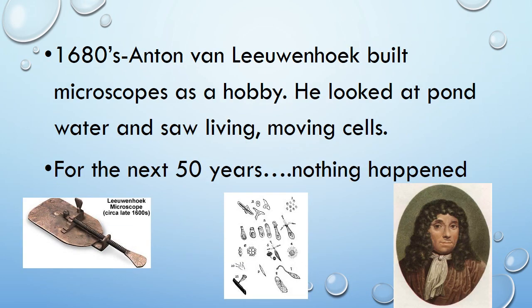In the 1680s, Anton van Leeuwenhoek built microscopes as a hobby — he was a pretty big science nerd. The very first thing he looked at was pond water, and in it he saw living, moving cells. He was absolutely astounded. Other people were actually quite skeptical; they didn't believe there could be tiny things floating in water that were alive and moving on their own. So for about the next 50 years, nothing really happened in cell discovery. Leeuwenhoek continuously built microscopes and examined blood and skin, but nobody really believed him or took it seriously.